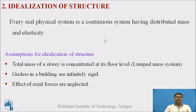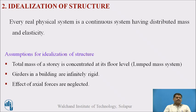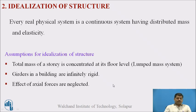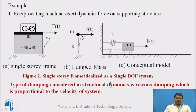Every physical system is a continuous system having distributed mass and elasticity. The assumptions for idealization of a structure are: the total mass of the story is concentrated at its floor level, giving a lumped mass system; girders in a building are infinitely rigid; and the effect of axial forces is neglected.